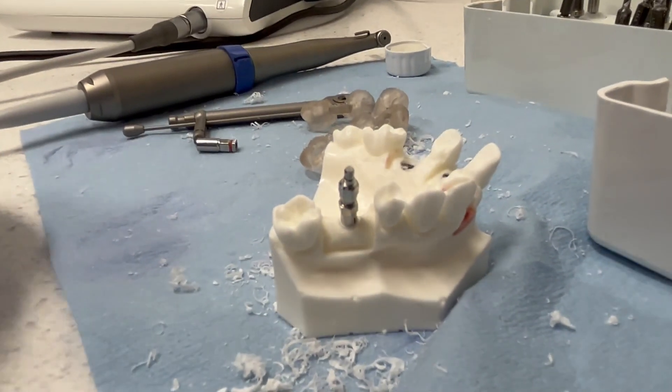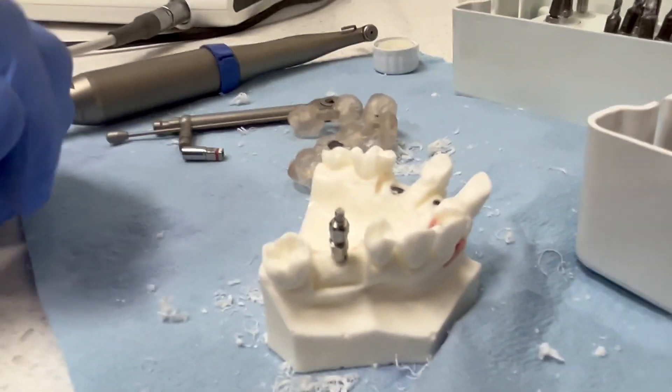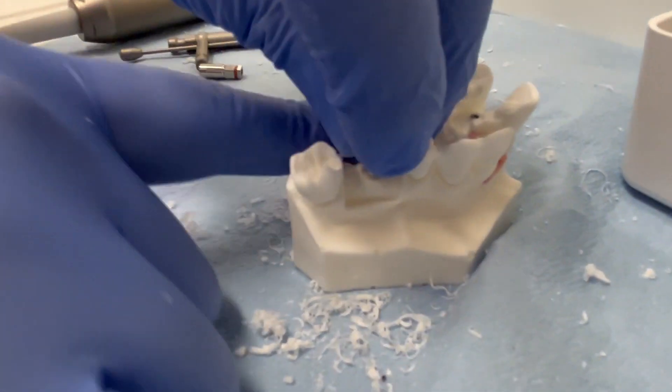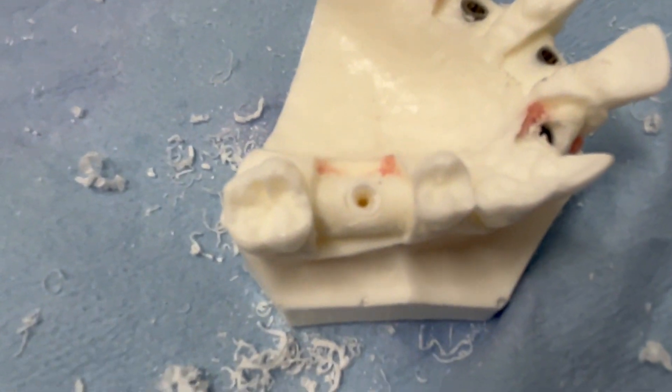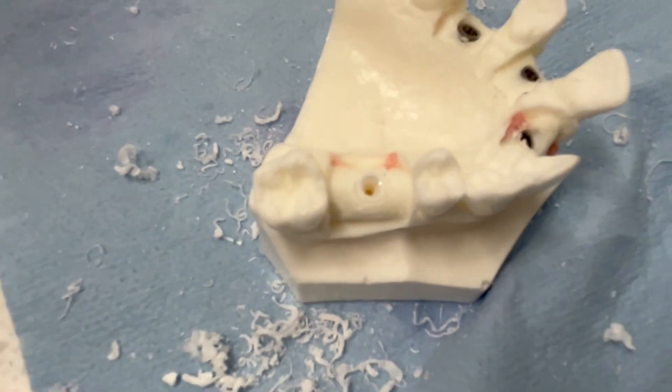There's our implant placed. Everything looks good. And then we will just pop the mount up. Out of the implant. And there you can see our ZI implant placed right in the middle of the ridge. It's awesome.